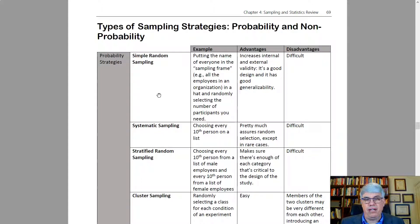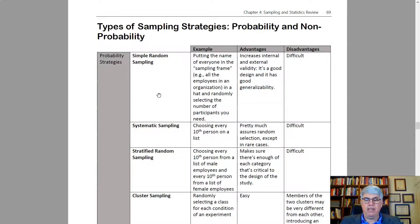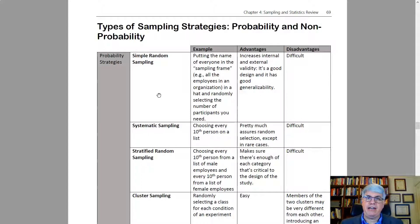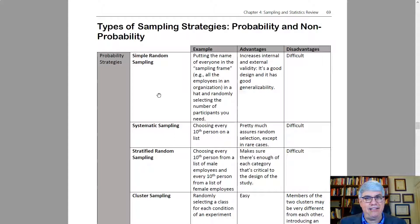Simple random sampling has strong internal validity — you've designed a test well to find out which training works better. It also has good external validity, meaning you can generalize results to the rest of the population. The disadvantage is that it's really hard to do, especially in large organizations. If you're studying an organization with thousands of people, you likely couldn't get all their names, and randomly selecting 300 and getting them all to fill out a survey is like herding cats.